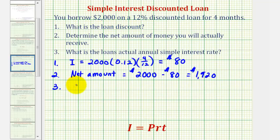So using our simple interest formula, I, the interest is $80. This time P, the principal, is actually the amount of money that we receive, which is $1,920.